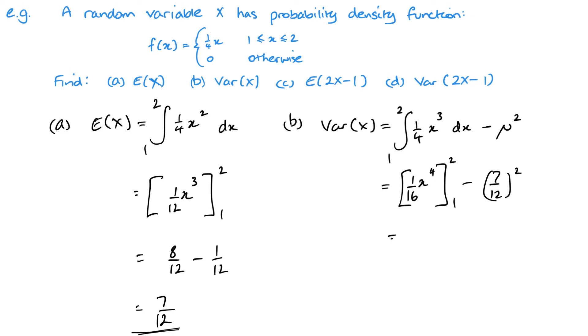Substituting in 2, it's going to give me 2 to the power 4 is 16, so we've got 16 over 16, which is obviously 1, minus 1 over 16, that's from my integration part. Then of course we minus 49 over 144, and that gives me 43 over 72, and I can leave that as a fraction.